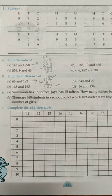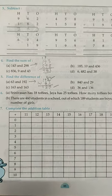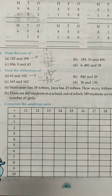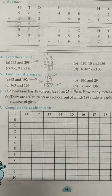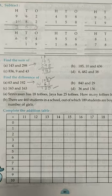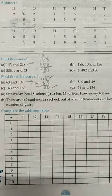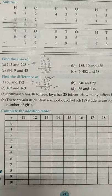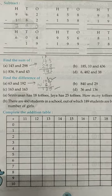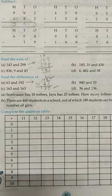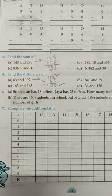Number 6. A and B. These two is the statement type of sum. Srinivasan has 18 toffees. Jaya has 25 toffees. How many toffees both have? So both of the students toffees, 18 toffees one of them and another of 25 toffees. So you need to add these two numbers.